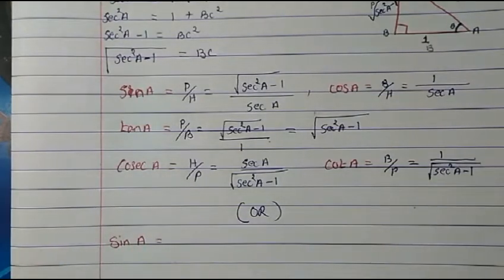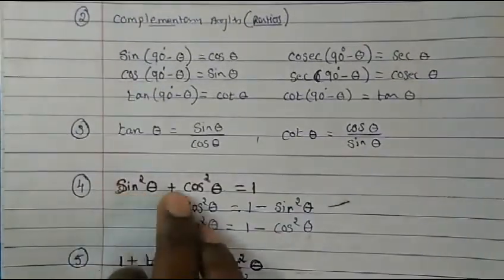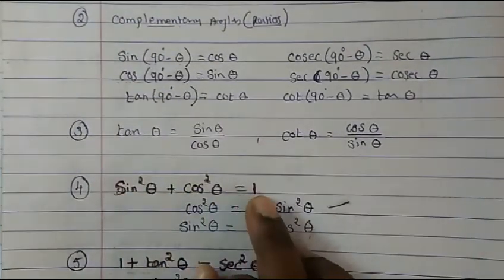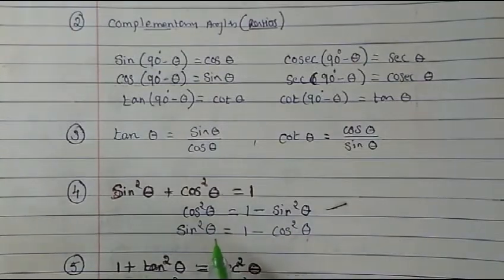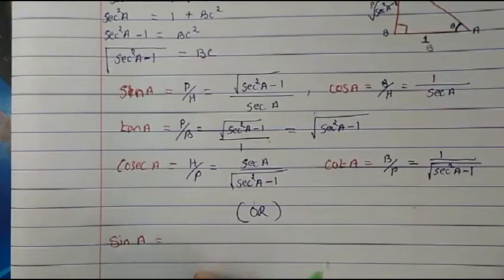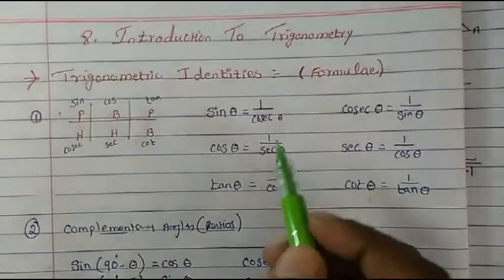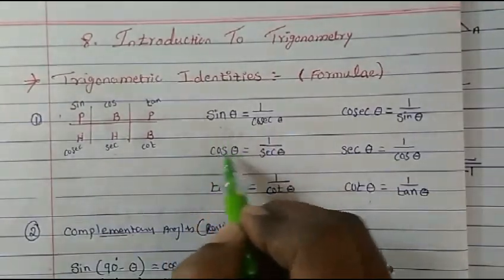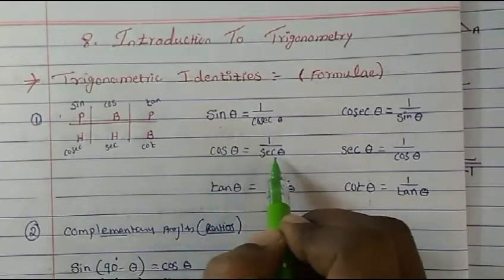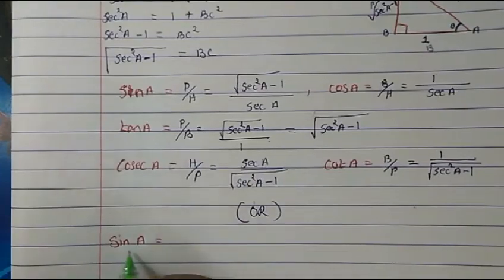Using the identity method: for sin A, recall that sin²θ + cos²θ = 1. We need to turn everything into sec. Since sin can be converted to cos, and cos can be converted to sec, we start there. sin A can be written as √(sin²A).